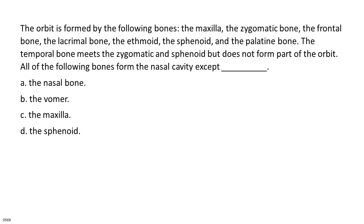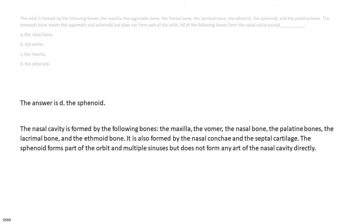All of the following bones form the nasal cavity except: A. The nasal bone. B. The vomer. C. The maxilla. D. The sphenoid. The answer is D, the sphenoid. The nasal cavity is formed by the following bones: the maxilla, the vomer, the nasal bone, the palatine bones, the lacrimal bone, and the ethmoid bone. It is also formed by the nasal conchae and the septal cartilage. The sphenoid forms part of the orbit and multiple sinuses but does not form any part of the nasal cavity directly.